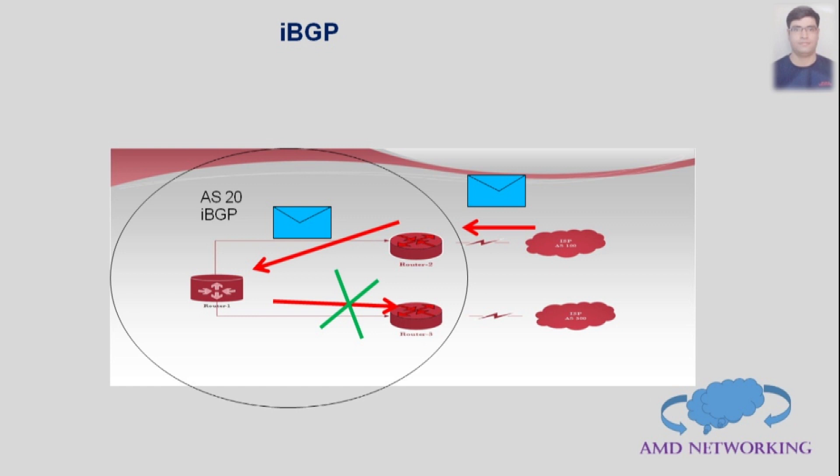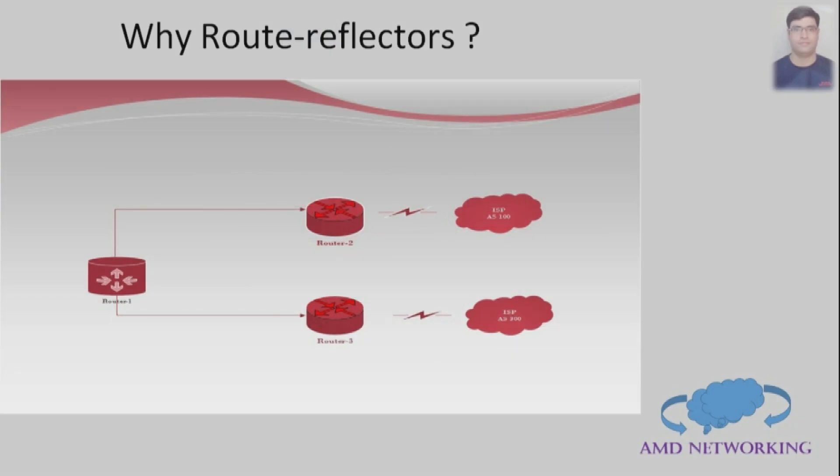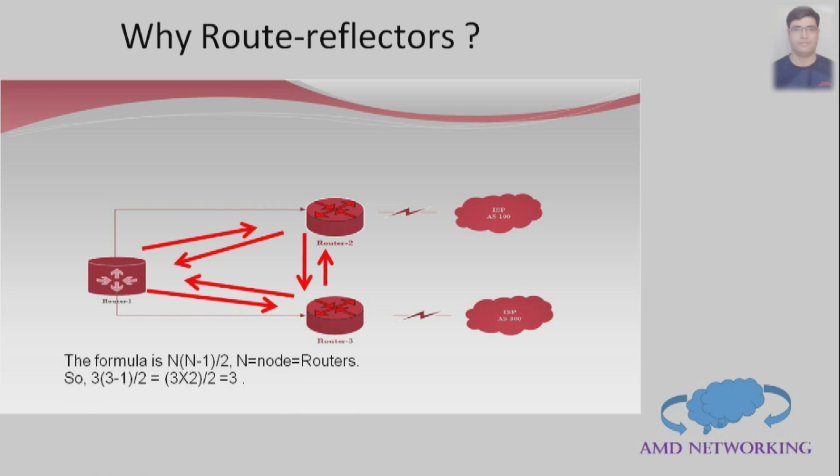Why route reflectors? Here we have three routers. We establish full mesh, here is not a big deal to establish full mesh. And the formula for how much peers required IBGP for full mesh is N(N-1)/2, where N is equal to node, is equal to routers.